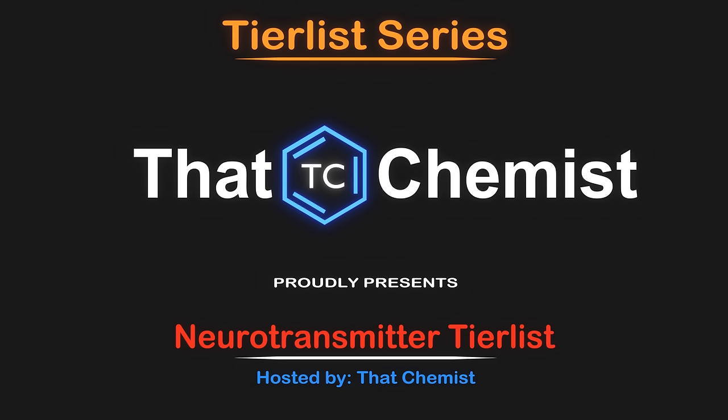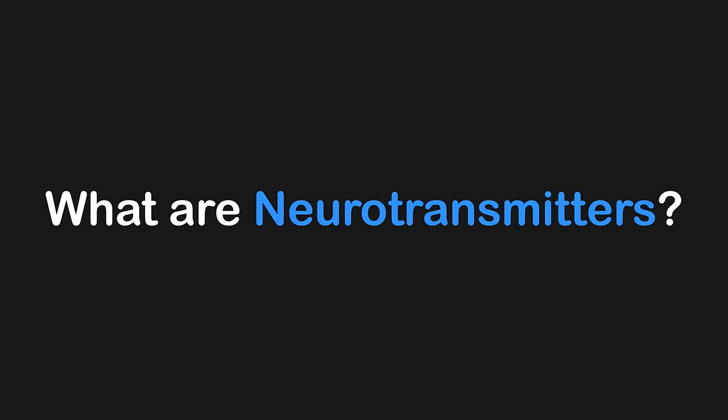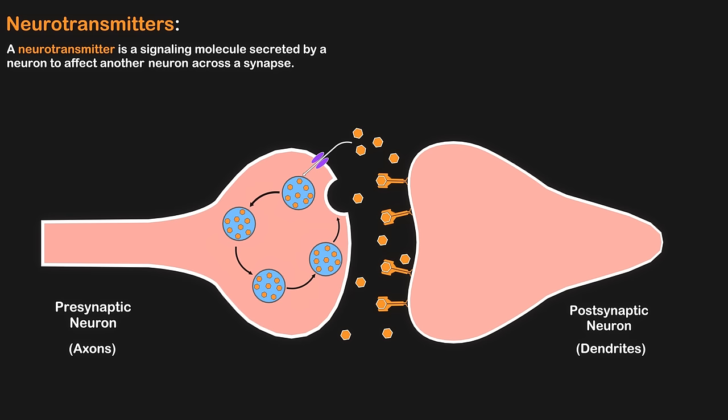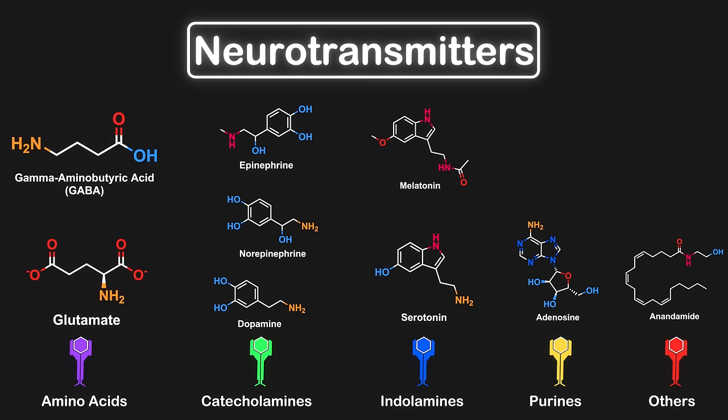Before we can discuss specific neurotransmitters, first we should discuss what neurotransmitters are. Neurotransmitters are chemical messengers that allow neurons to communicate with each other. Neurotransmitters are unique as each one has a specific chemical structure that allows it to interact with specific receptor proteins on the postsynaptic neuron.